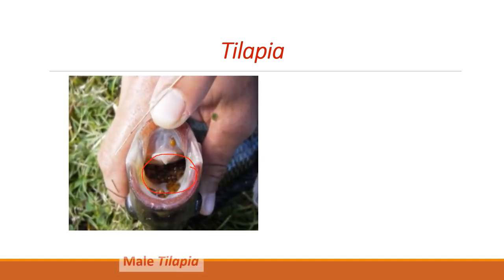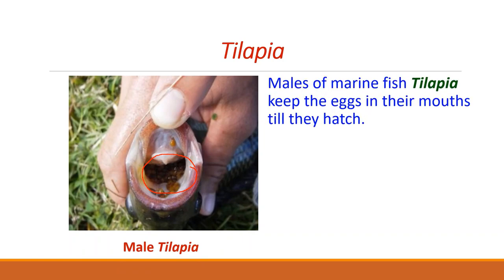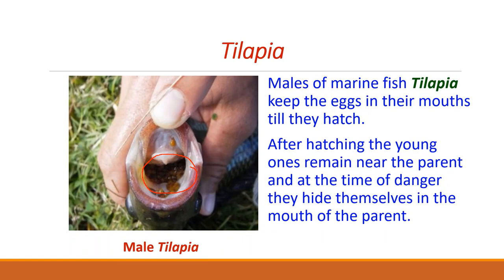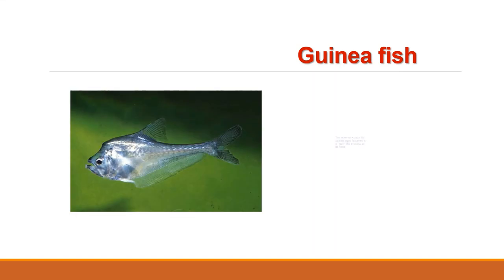During the entire process, the male does not take any food. After hatching, the young ones remain near the parent and at the time of danger they hide themselves in the mouth of the parent. The male of New Guinea fish, Kurtus, carries the eggs fastened to a hook-like process on its head.